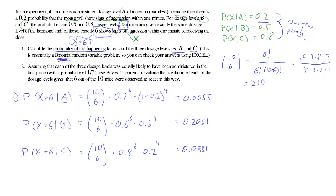Part 2: assuming that each of the three dosage levels was equally likely to have been administered, we use Bayes' theorem to evaluate the likelihood of each dosage level given that 6 out of 10 mice reacted. Previously we calculated conditional probabilities conditional on the dosage; now we want the probabilities the other way round — the probability that we administered dosage A given we observed 6 cases of regression.